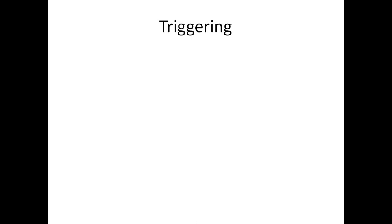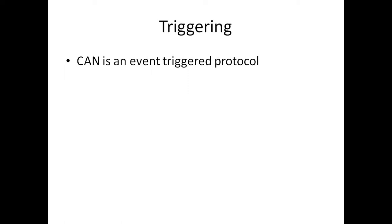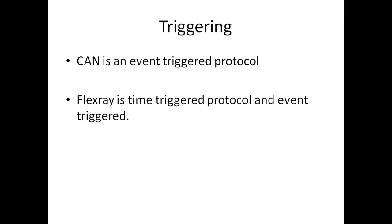Regarding triggering, CAN is an event-triggered protocol — some event should happen for any message to be sent. Whereas FlexRay is both a time-triggered as well as an event-triggered protocol. More details about why it is time-driven as well as event-driven will be explained in the upcoming slides.